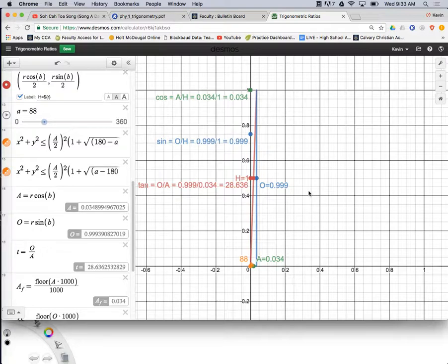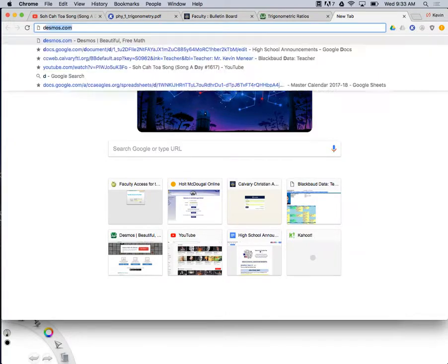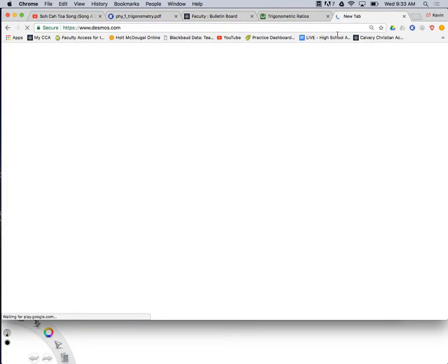It gets bigger and bigger, it gets to infinity. So as my angle gets smaller, tangent goes to 0. As it gets bigger and closer to 90, tangent goes to infinity. And so, if we want to take a look at it, I will graph tangent for you.